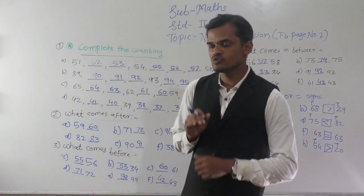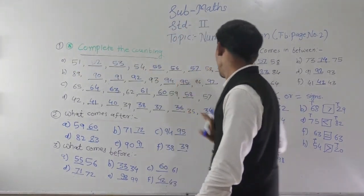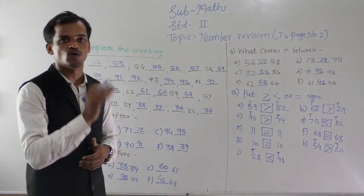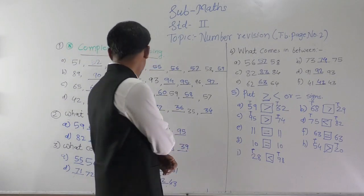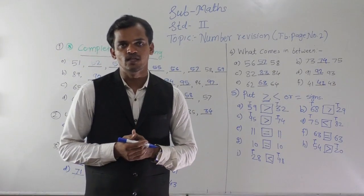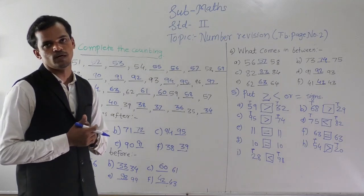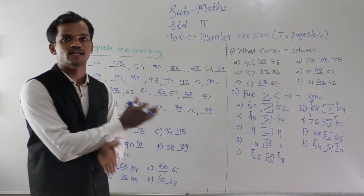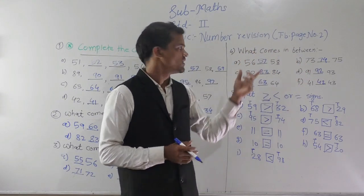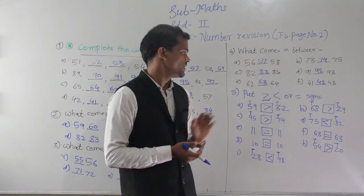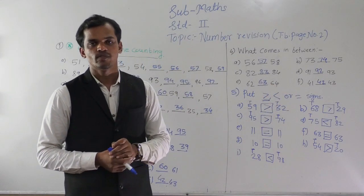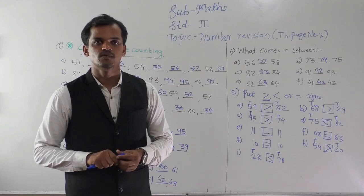Dear students, today we have seen examples 1 to 5. The first example was based on number series: forward counting and backward counting. The second example was after number — one more than the given number. Then before number — one less than the given number. Then between number — the number that comes in between two numbers. Then greater than, smaller than, and equal to signs. I hope you understood. Thank you very much.